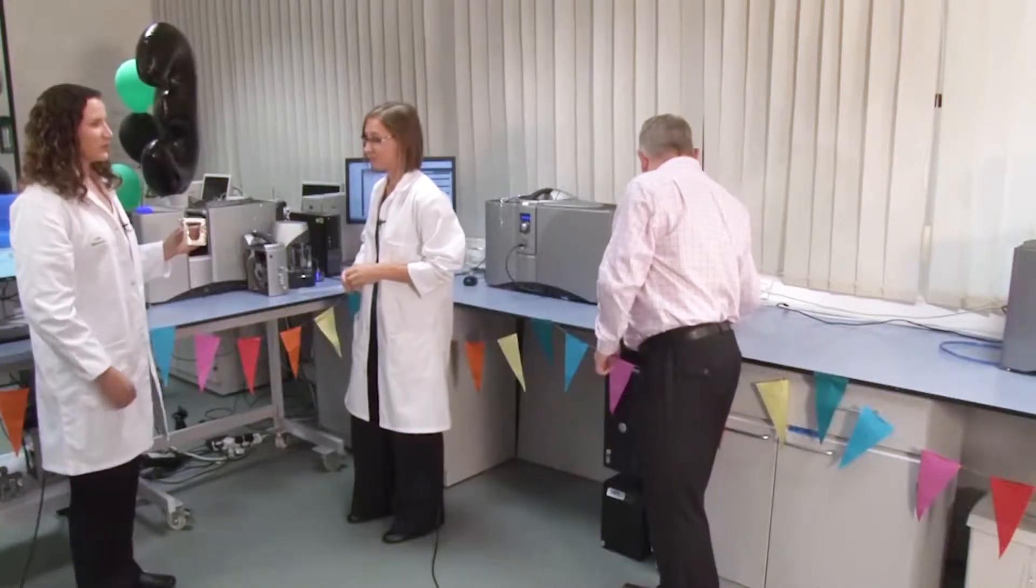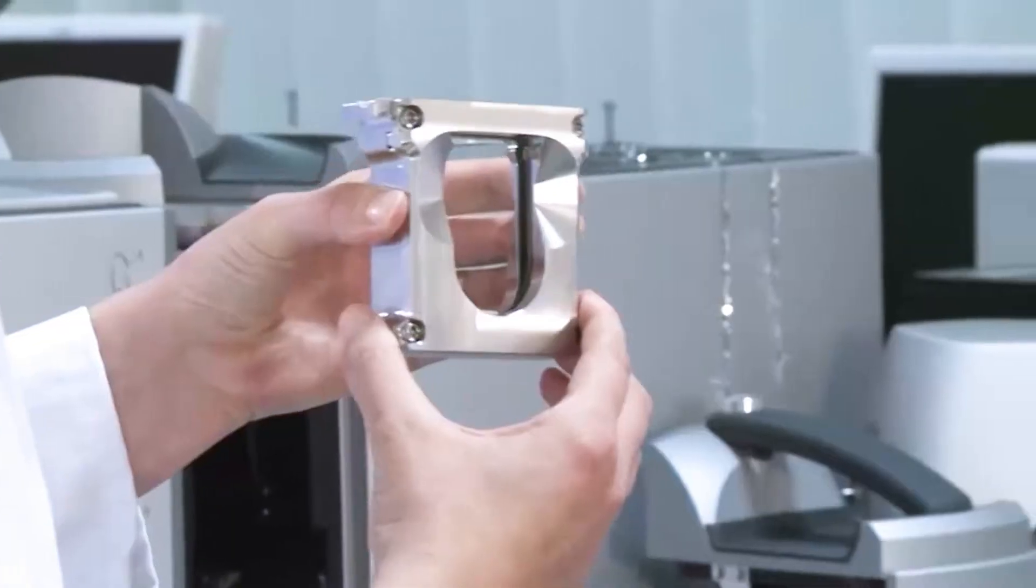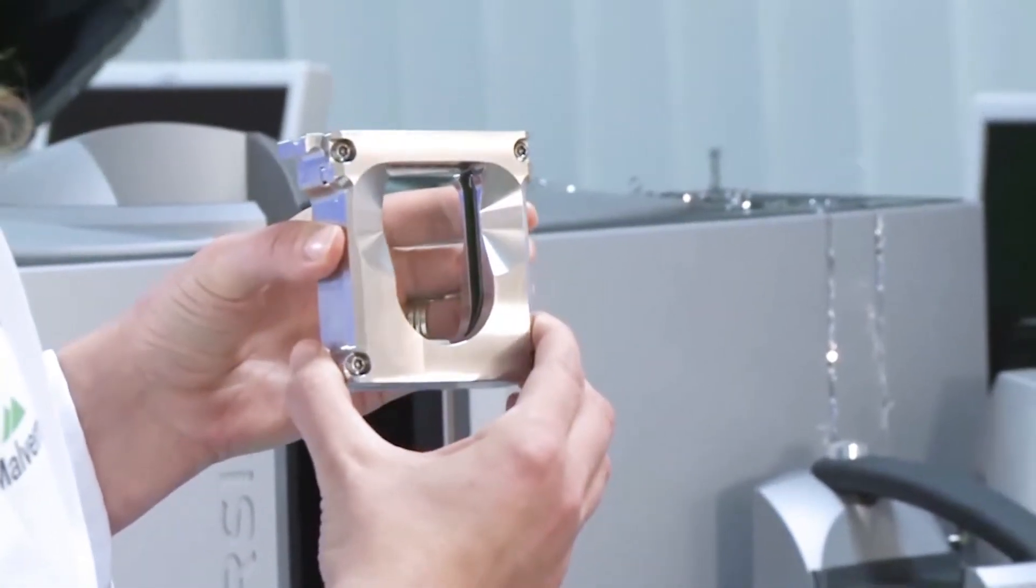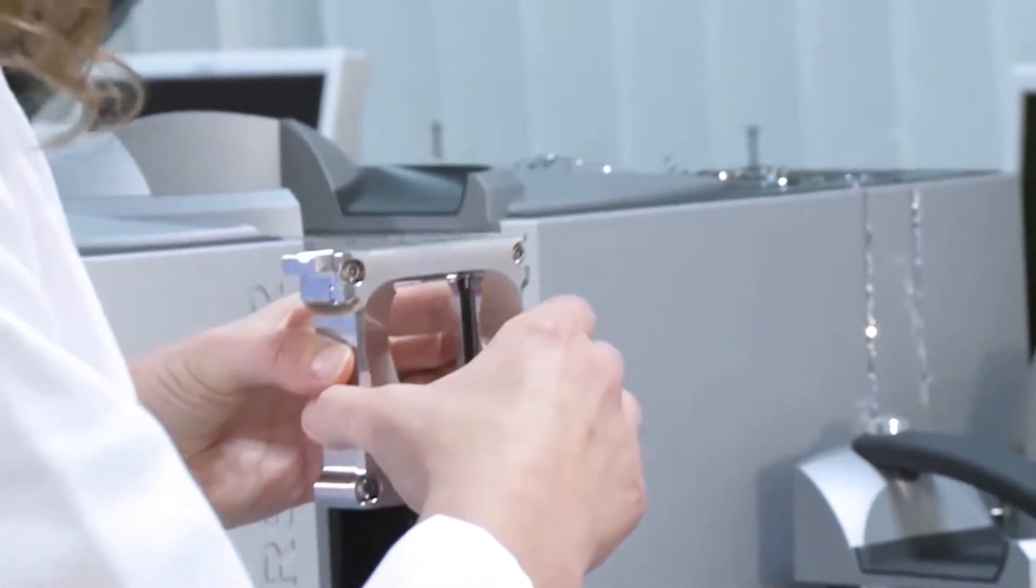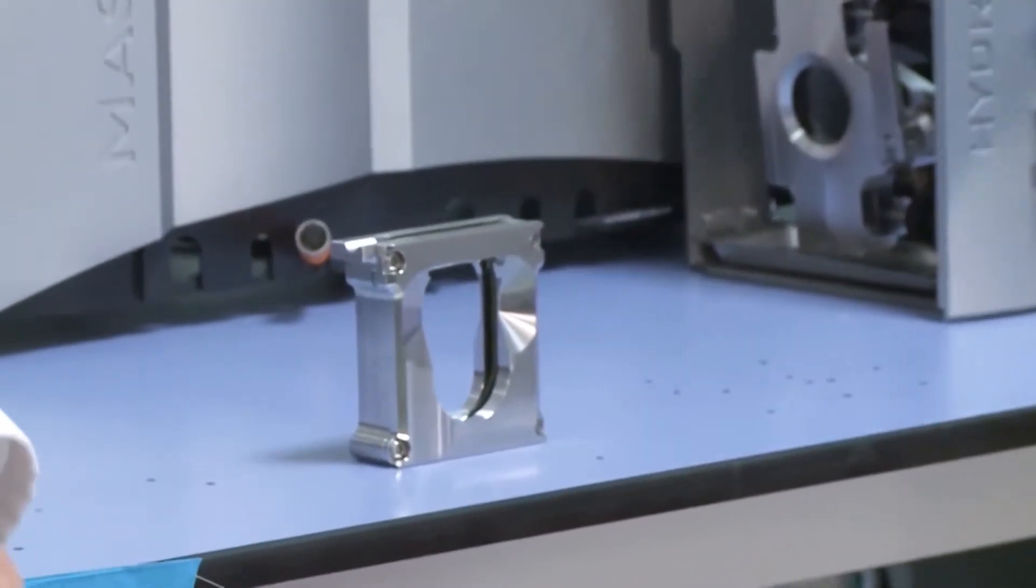Well, our development team have also been really busy working towards helping our customers at this end of the scale as well, and what we have is this new cuvette, and this allows you to measure just six or seven milliliters of dispersant, so yes, you can measure very small volumes of material. So, Anne, I'll let you show us how that works.